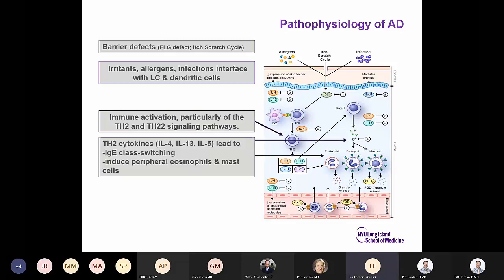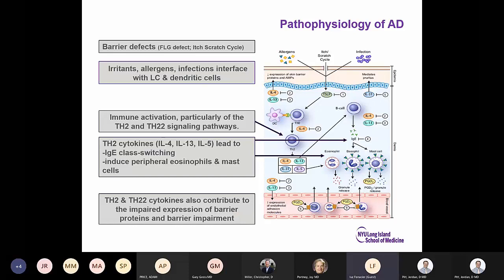TH2 cytokines such as IL-4, IL-13, and IL-5 lead to IgE class switching and induce peripheral eosinophils and mast cells. TH2 cytokines also contribute to impaired expression of the barrier proteins and barrier impairment.